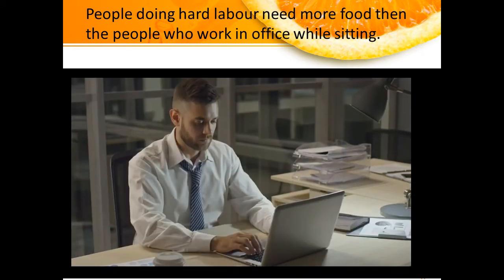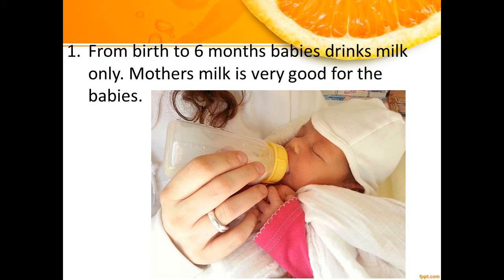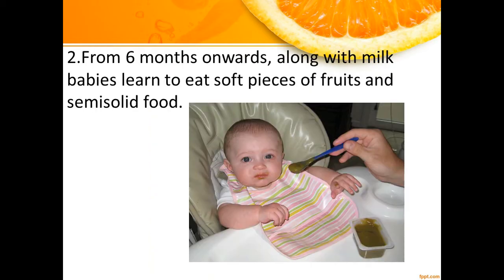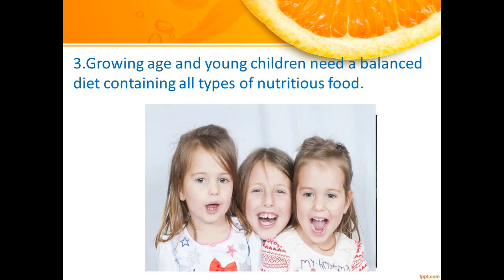From birth to 6 months, babies drink milk only. Mother's milk is very good for babies. From 6 months onwards, along with milk, babies learn to eat soft pieces of fruits and semi-solid food. Growing children need a balanced diet containing all types of nutritious food.